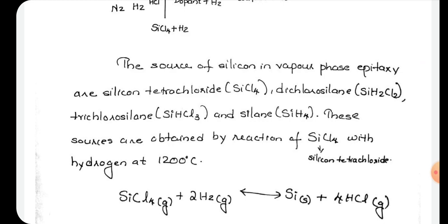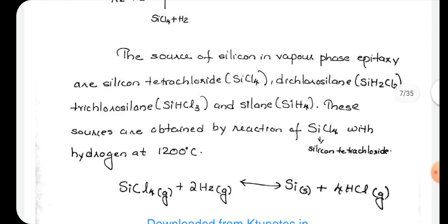Also, dichlorosilane, trichlorosilane, or silane itself may be used. Dichlorosilane is SiH2Cl2, trichlorosilane is SiHCl3, and silane is SiH4. We familiarized these compounds in the first module.